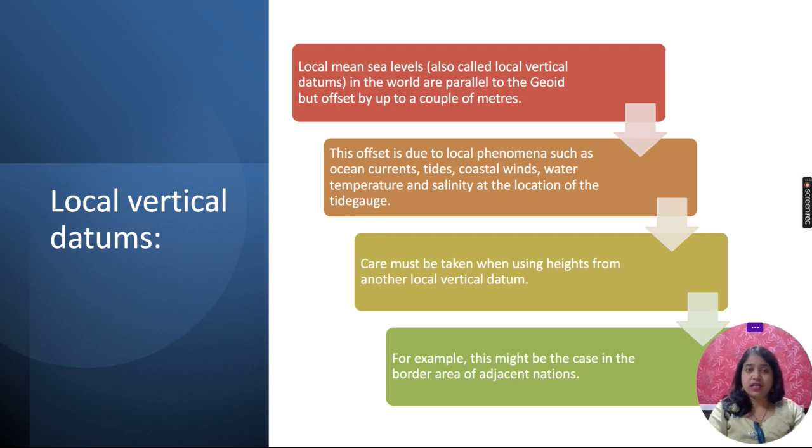Local vertical datum: We first find the local mean sea level, also called the local vertical datum. It is parallel to the geoid but offset by a couple of meters. This offset is due to local phenomena such as ocean currents, tides, coastal wind, water temperature, and salinity at the location of tide gauges. We have different water characteristics at different places, which cause the water height to vary. Care should be taken while using height from another local vertical datum, for example in border areas of adjacent nations. When combining two different maps, the heights may be different for the same surface, so we need to take care when combining neighboring maps.